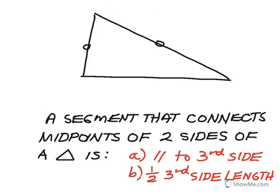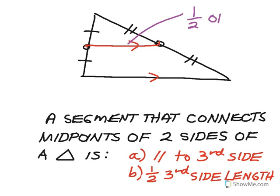This last theorem is that if you have a triangle and you connect the midpoints of two sides with a segment, that segment has two special properties. First, it's parallel to the third side of the triangle. And second, that segment is exactly half the length of the third side. So whatever the third side length is, this segment is half of it, or the third side is twice the length of that segment.